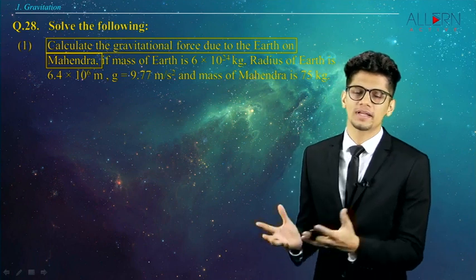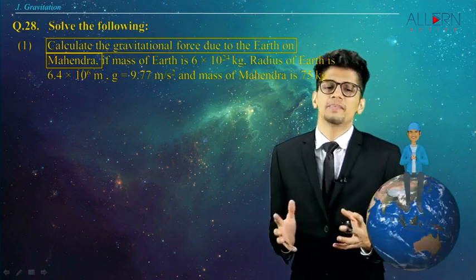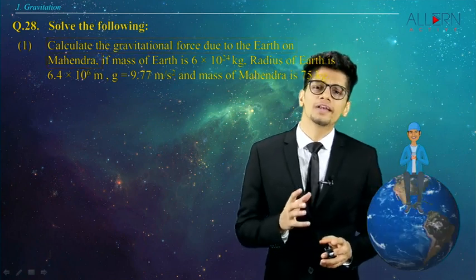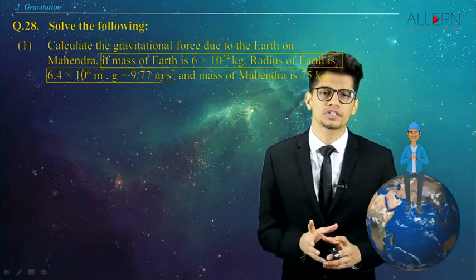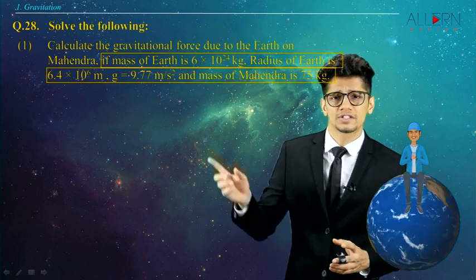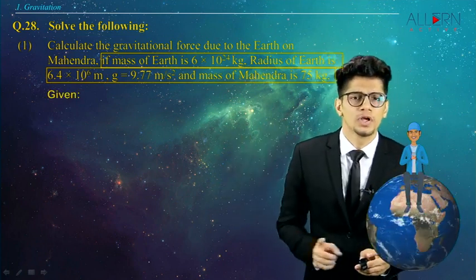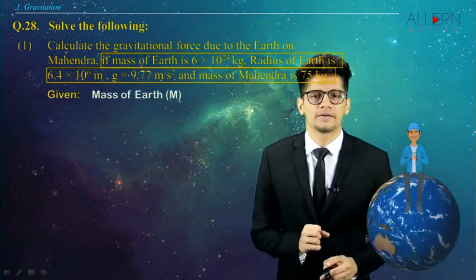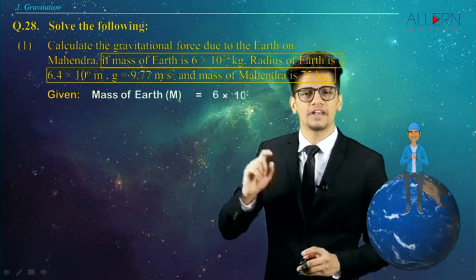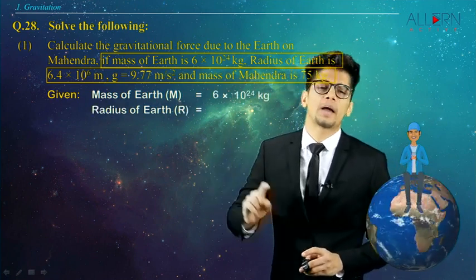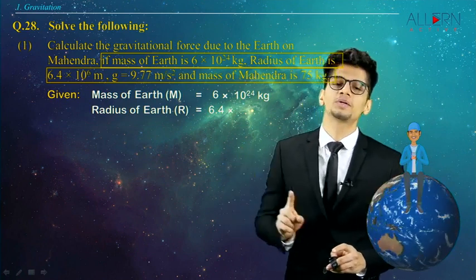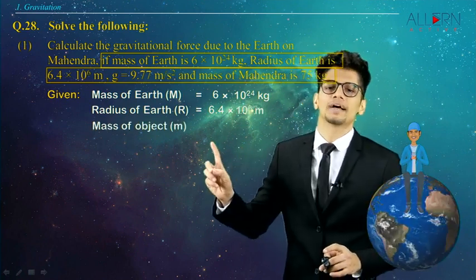Now what else have we been given in the question? We know the value of mass of the Earth, the radius of the Earth, small g, and mass of Mahindra. So we'll write these values in the given data. The mass of the Earth is 6 × 10²⁴ kg. The radius of the Earth, capital R, is 6.4 × 10⁶ meters.